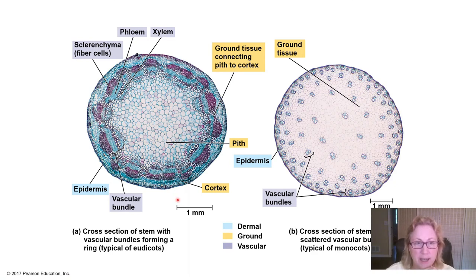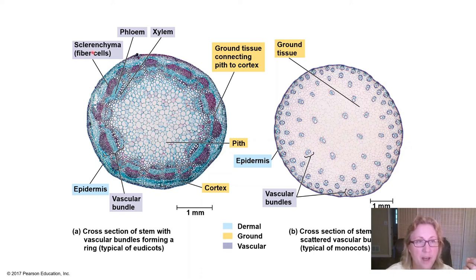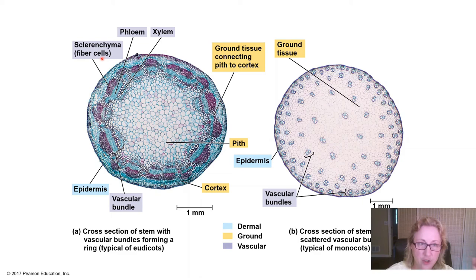Monocot and dicot stems look different. In monocots, the vascular bundles are more scattered; within each vascular bundle there's xylem and phloem, and the xylem tends to be larger than the phloem vessel elements. In a dicot stem, there's a large central pith area of supportive tissue. The ground tissue called sclerenchyma — from sclerus, meaning hard or rigid — has a lot of lignin and helps the plant maintain its shape. We also see the phloem and xylem, with the xylem vessels being larger, and the epidermis on the outside.